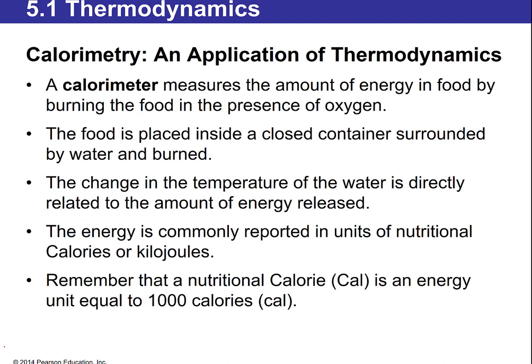They also discuss energy and food in this chapter. The amount of energy contained in food can be measured using a calorimeter. In lab, we burned nuts to measure nutritional calories. A nutritional calorie is actually a kilocalorie — equivalent to a thousand little-c calories. A calorie by definition is the amount of energy required to raise one gram of water one degree Celsius — that's how they defined the standard calorie.